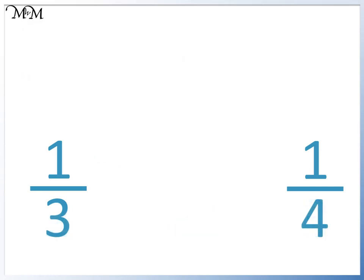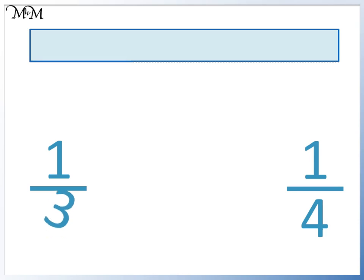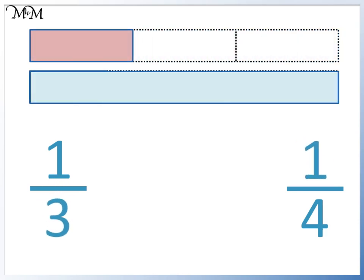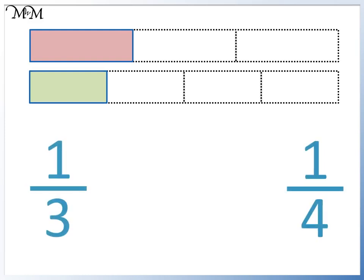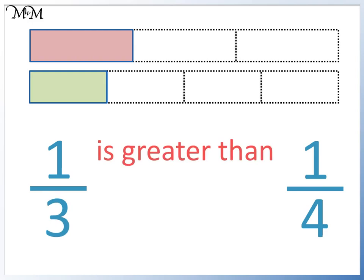Here we have one third compared to one quarter: one whole divided by three, and one whole divided by four. One third is bigger than one quarter. One third is a bigger fraction than one quarter because four is bigger than three. We say that one third is greater than one quarter. The greater than sign points to the smaller fraction. We can see that the smaller fraction has the bigger number on the bottom as its denominator. One third is bigger than one quarter because three is less than four, and we have divided into fewer parts.